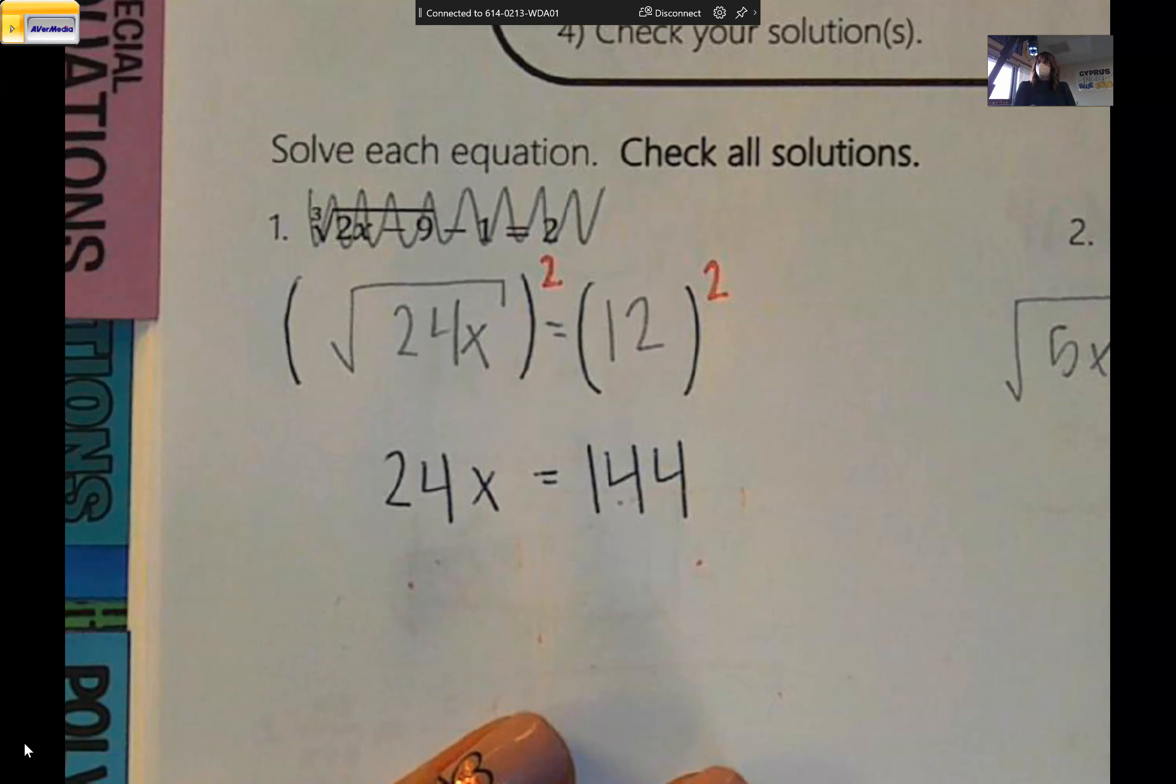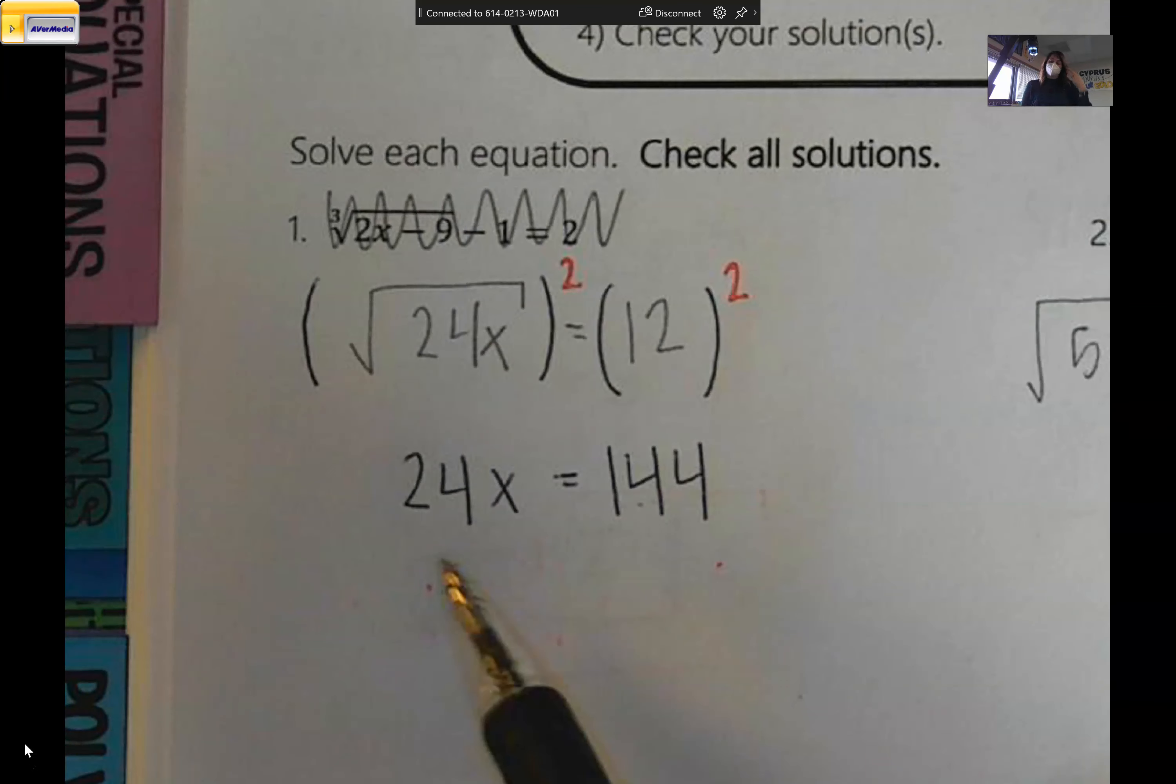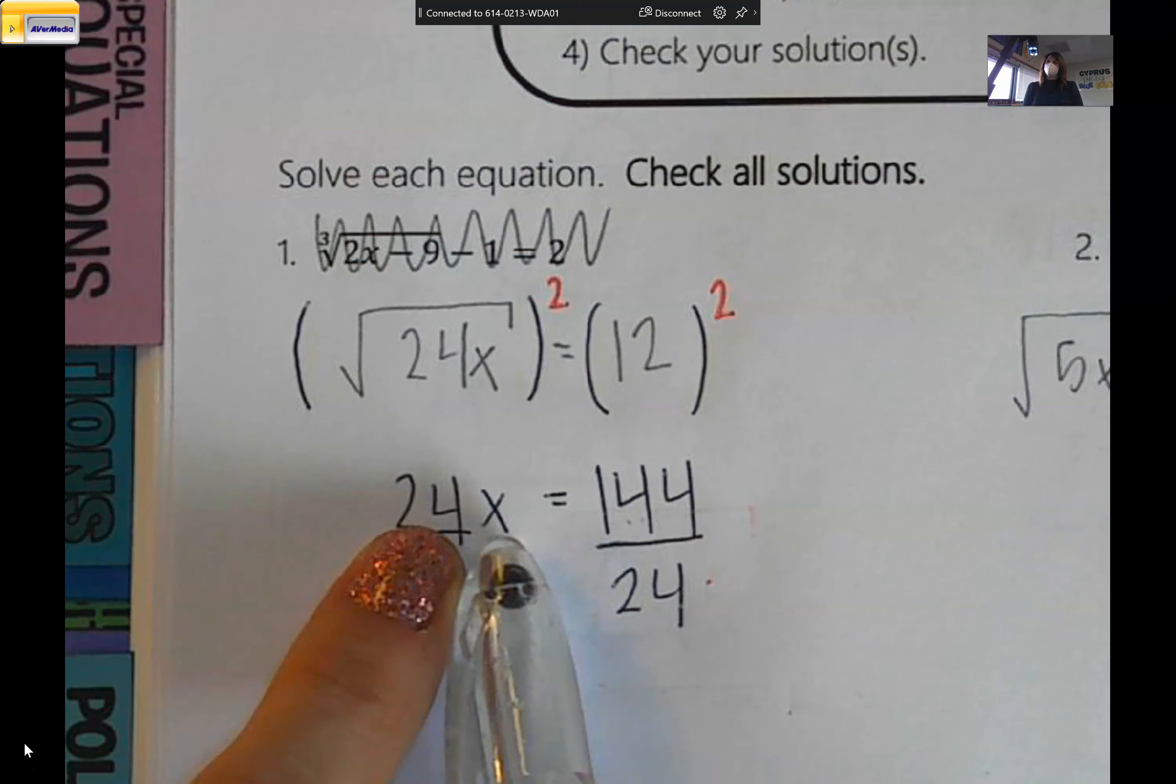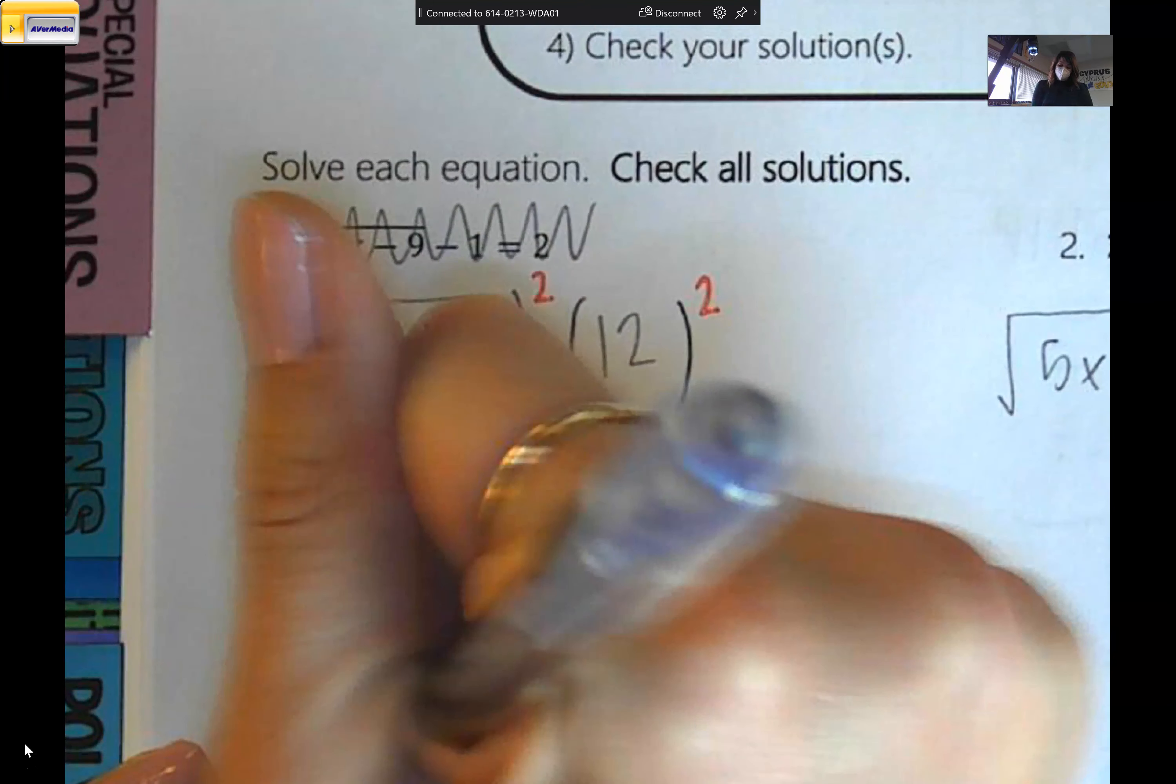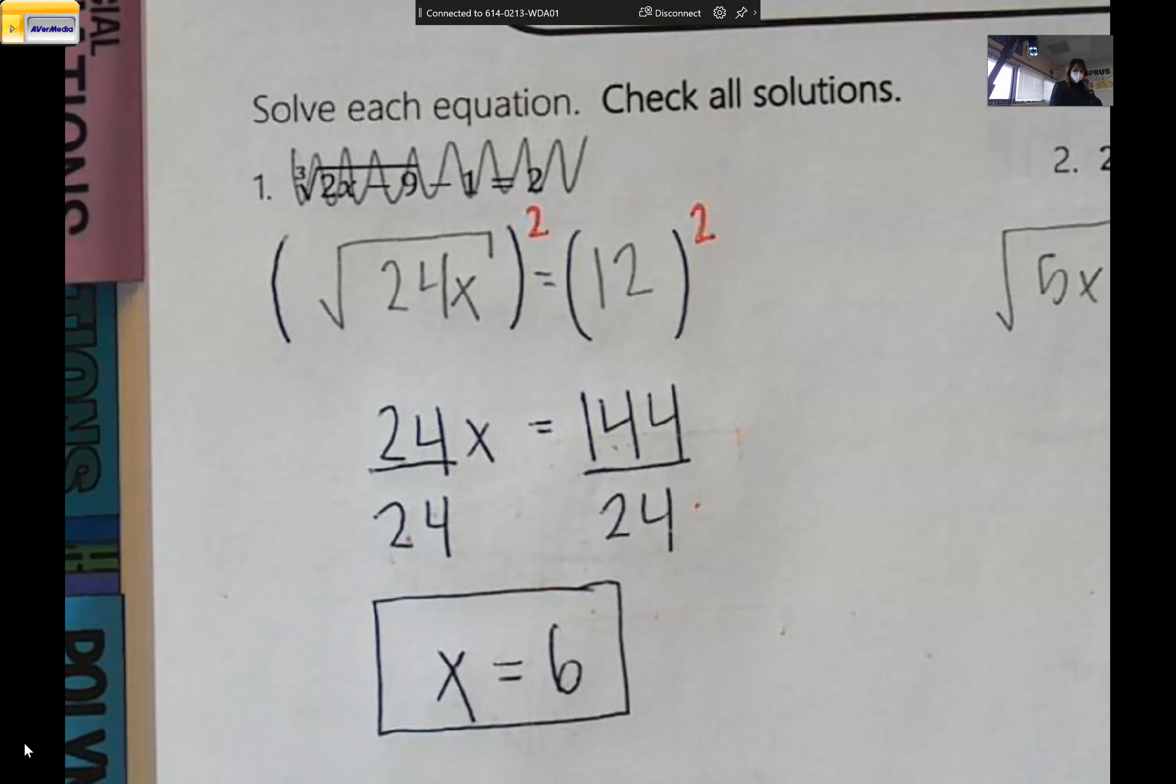Now we see is there anything that we need to add or subtract? And the answer is no. We would only add or subtract if we saw a plus 5 or a minus 5 here. So the next question would be do we multiply or divide? And we're going to divide both sides by 24. We want to get this x all alone. So 144 divided by 24 is 6. So the solution to that radical equation is x equals 6.